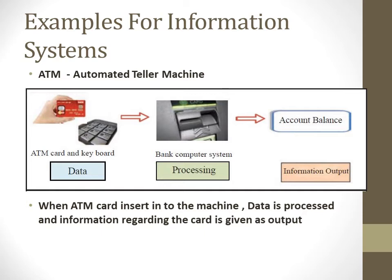Let's see how some information systems work. I have taken the example of an ATM card — we all take money from an ATM or check account balance. As input, we insert the ATM card and type the PIN number. The computer system then checks whether the relevant PIN number authenticates the card, processes it, and gives relevant record information such as account balance and transactions.